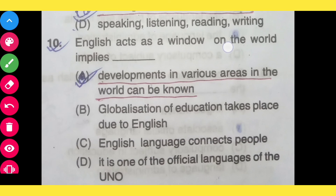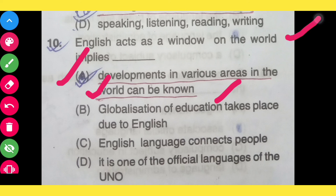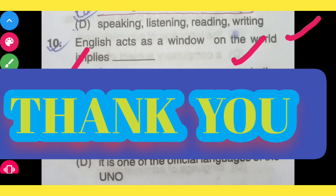Question number 10: English acts as a window on the world implies: option A, development in various areas in the world can be known; option B, globalization of education takes place due to English; option C, English language connects people; option D, it is one of the official languages of the UNO. The correct answer is: development in various areas in the world can be known. Thank you very much for watching.